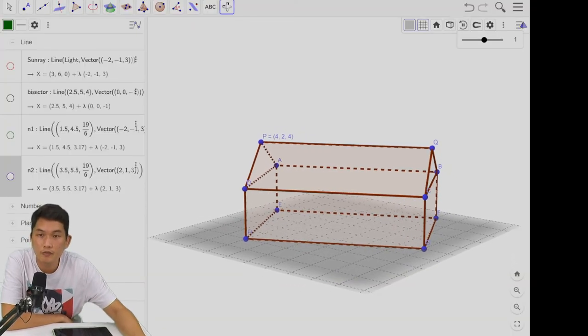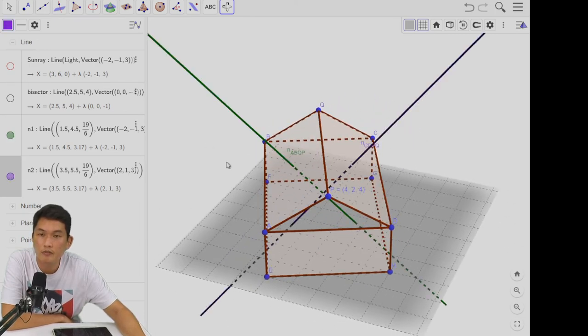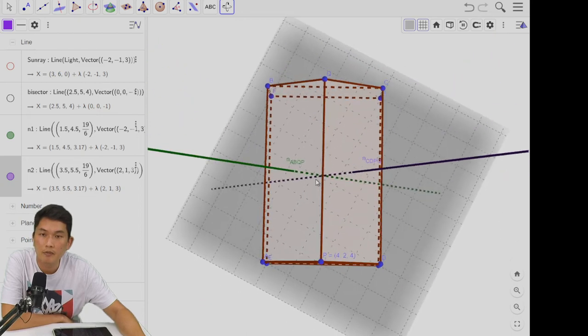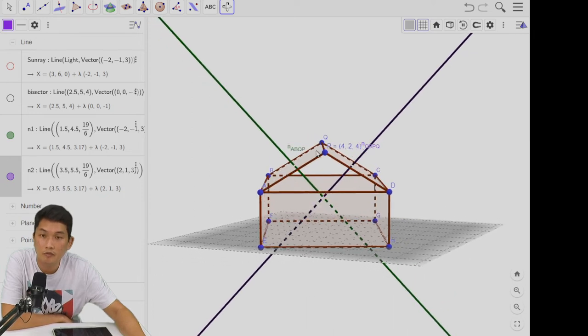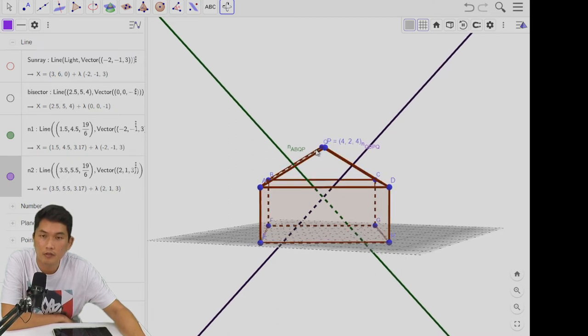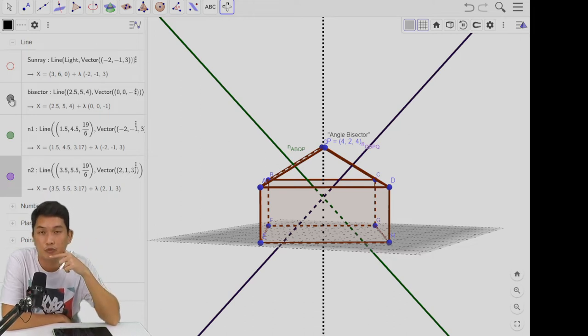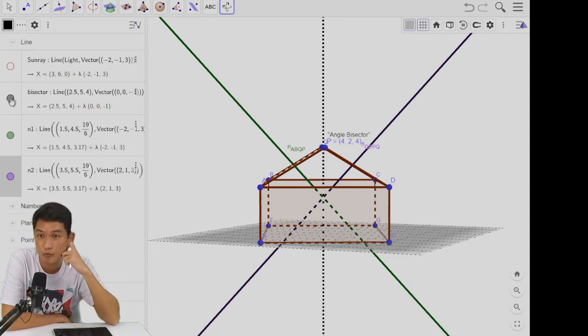I've plotted out the two normal vectors here, n1 and n2. As you can see, they pop up from the left and right slanted roofs. If I rotate this diagram so we look at the shed from the front, and I draw a vertical line upwards, this vertical line will bisect the angle between these two normal vectors. There's symmetry between these two normal vectors if I consider a vertical plane that passes through points P and Q.